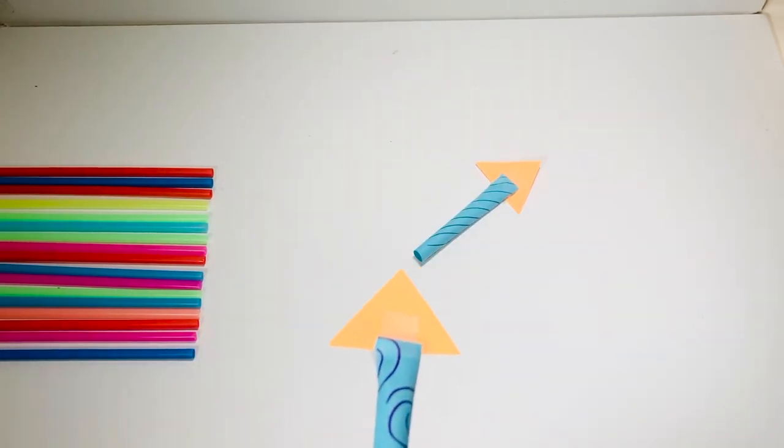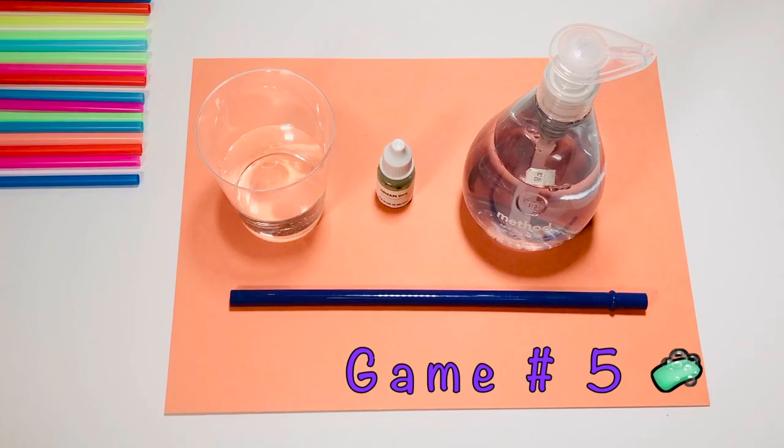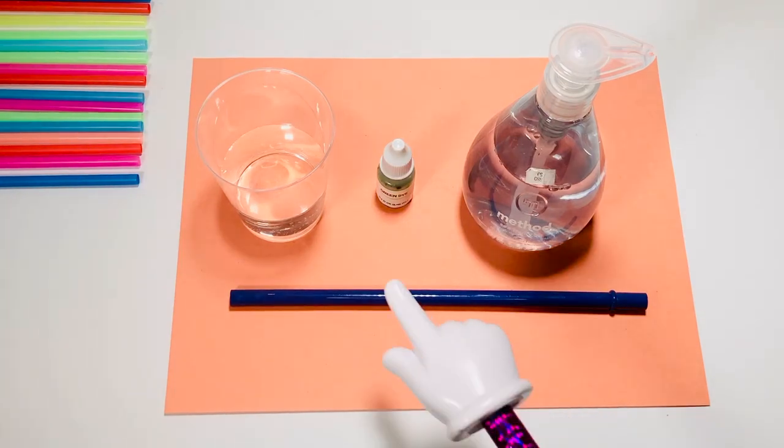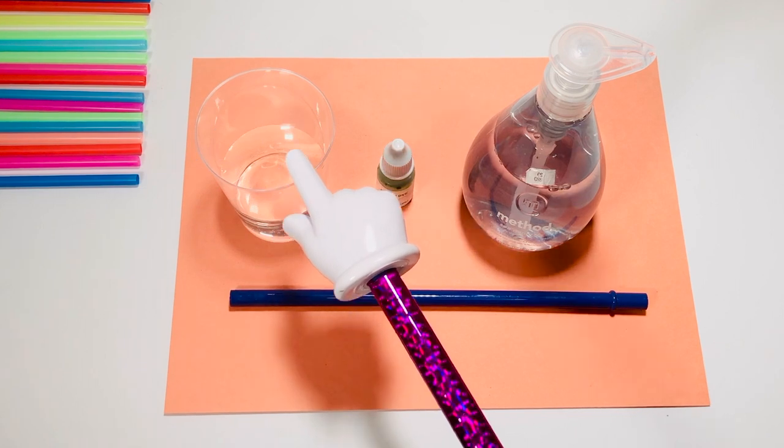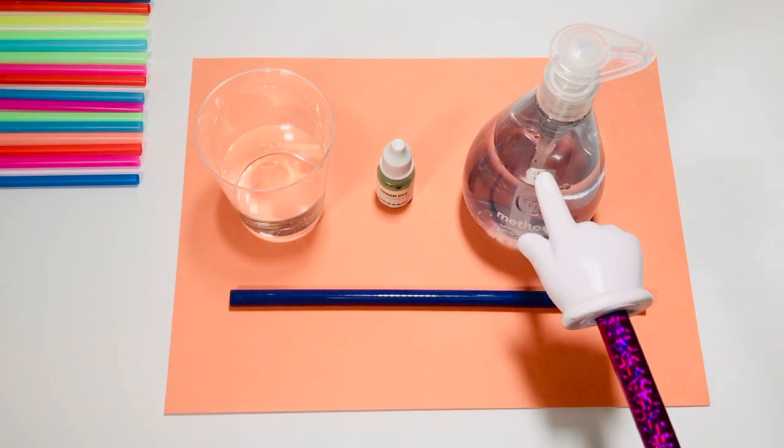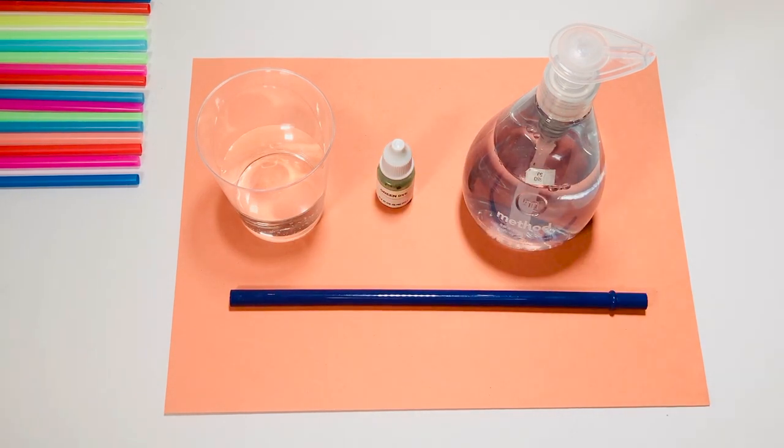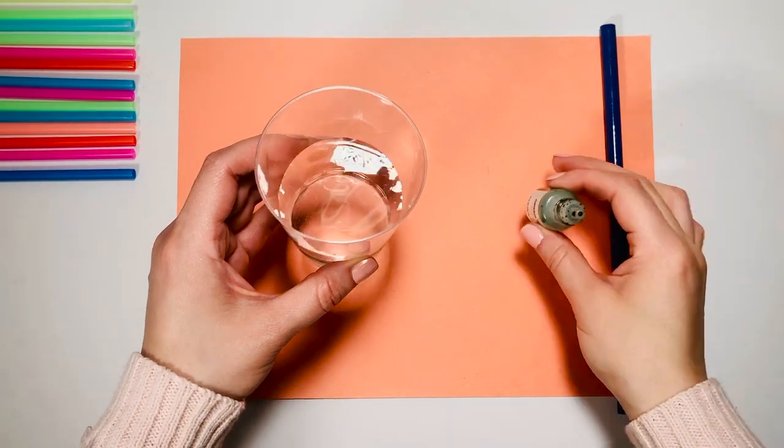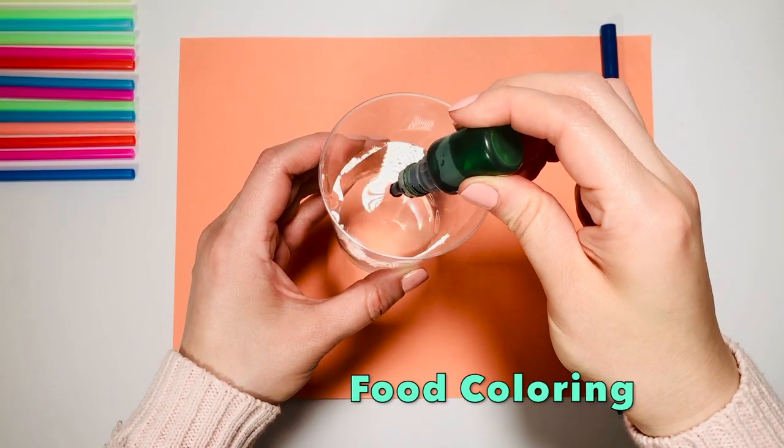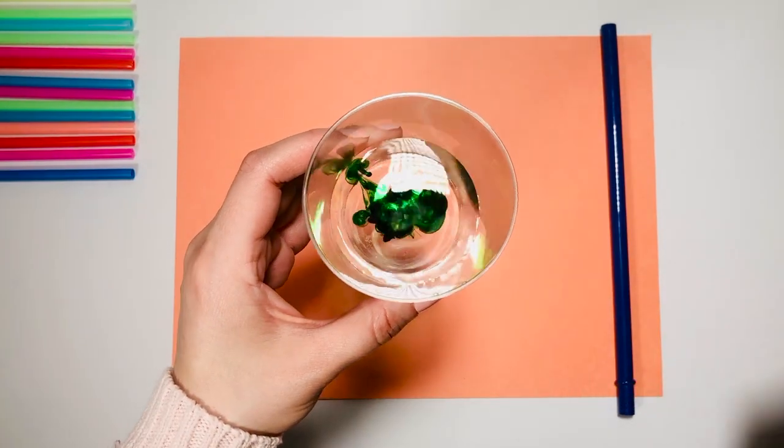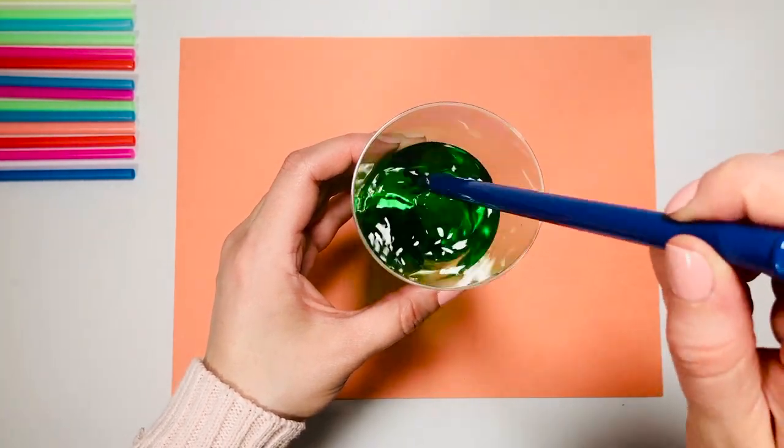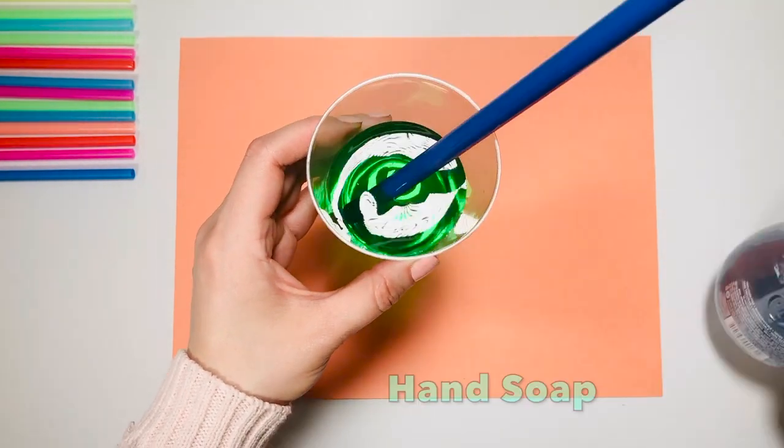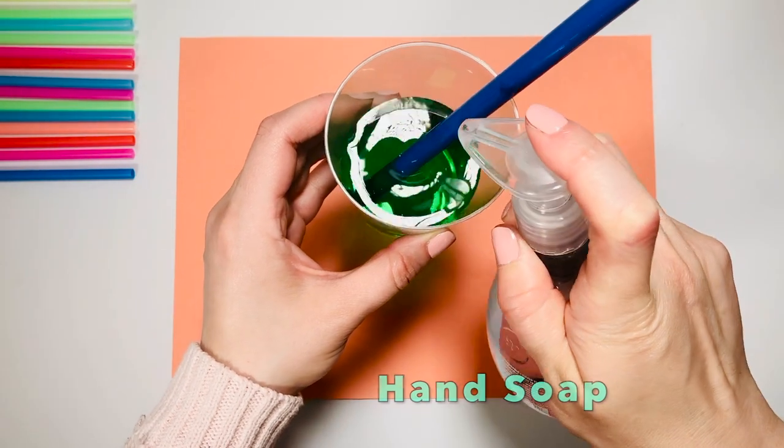Let's make some bubbles for game number five. You will need a straw, a cup with water, food coloring is optional, and a drop of hand soap. Practice blowing out of the straw before you put it in the water. Once it's in the water, it's very important that child does not drink it. Add some food coloring and add a squirt of hand soap.